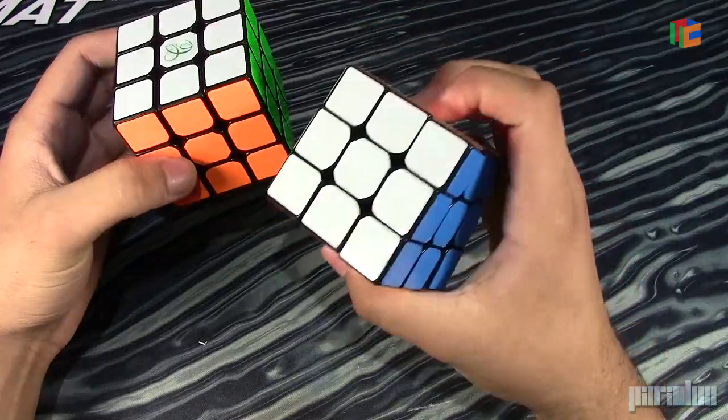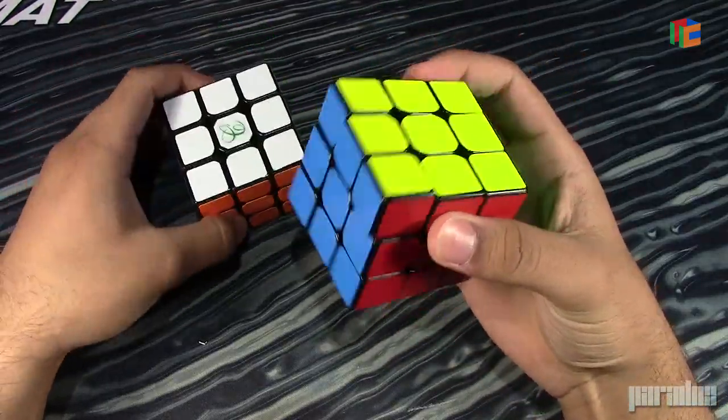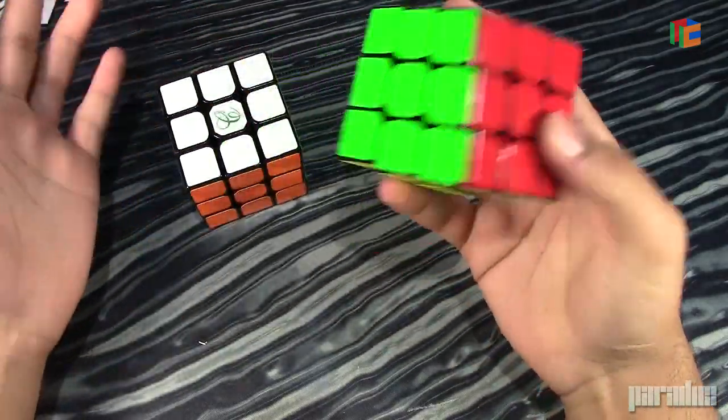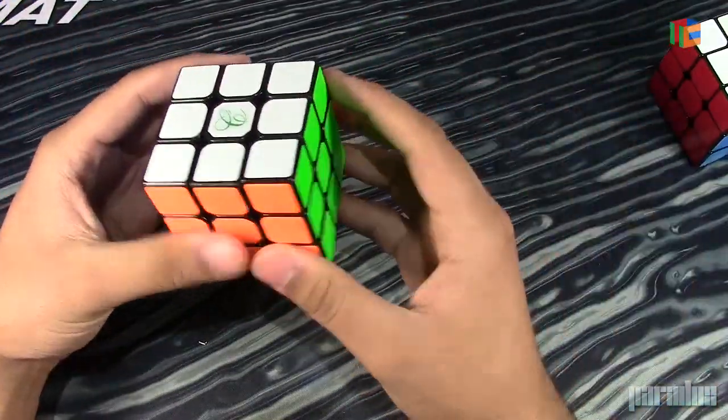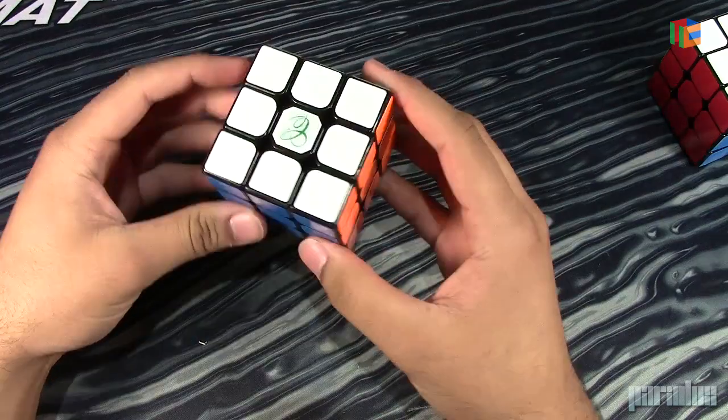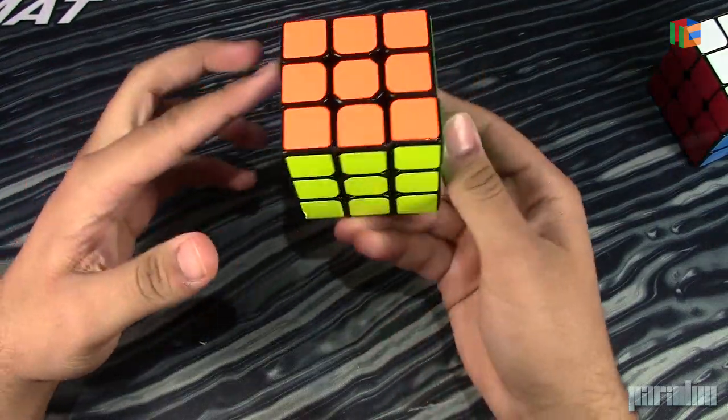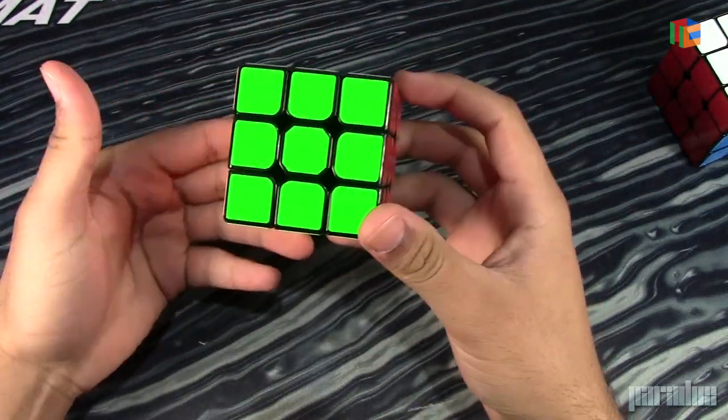The Hualong that I have right now is not very good. I don't know why, but I feel like I didn't set it up properly or something. But that's why I decided to try out the Cubicle's version of the Hualong to see how it is. So here it is, the Cubicle Hualong. Let's get into first turns and see how it is.